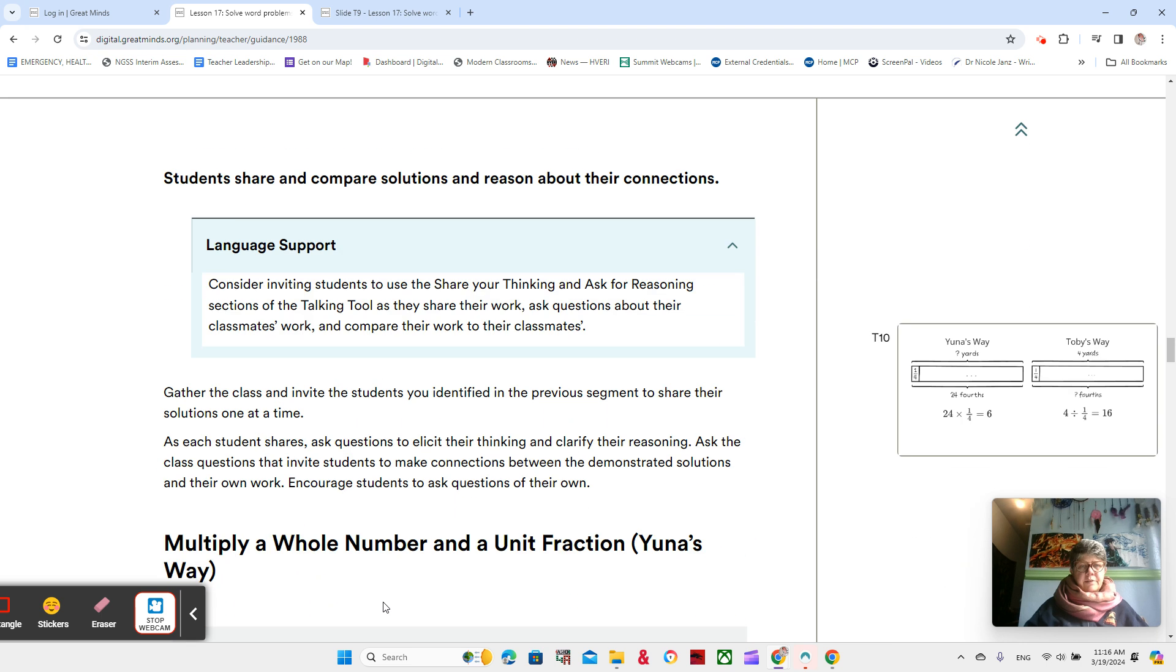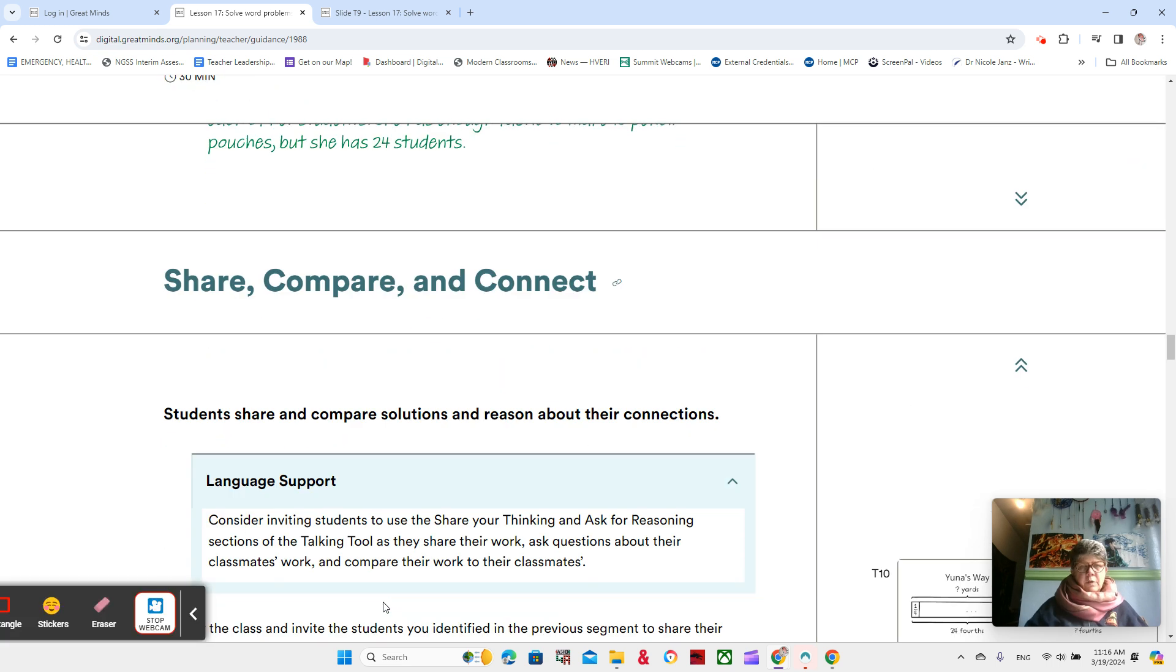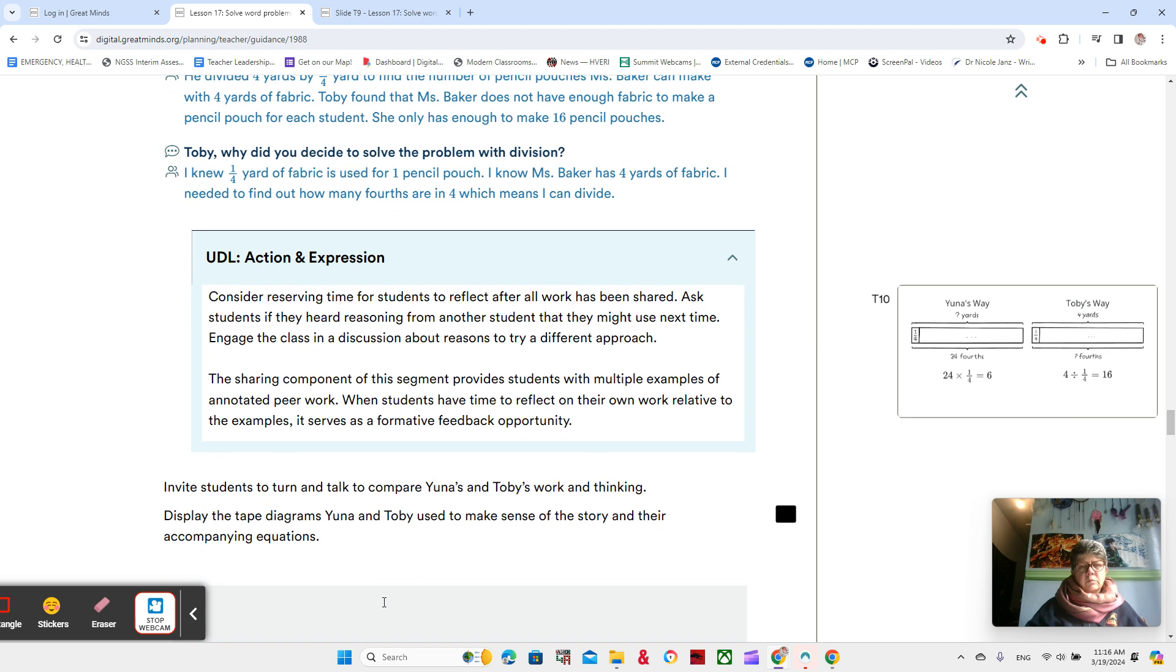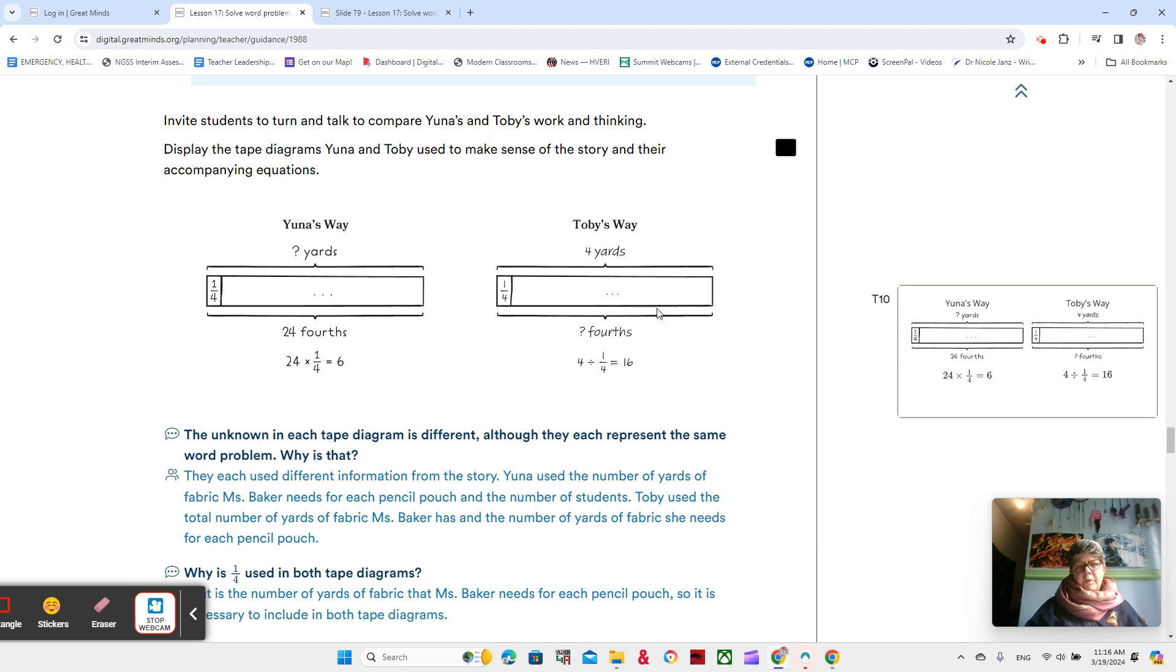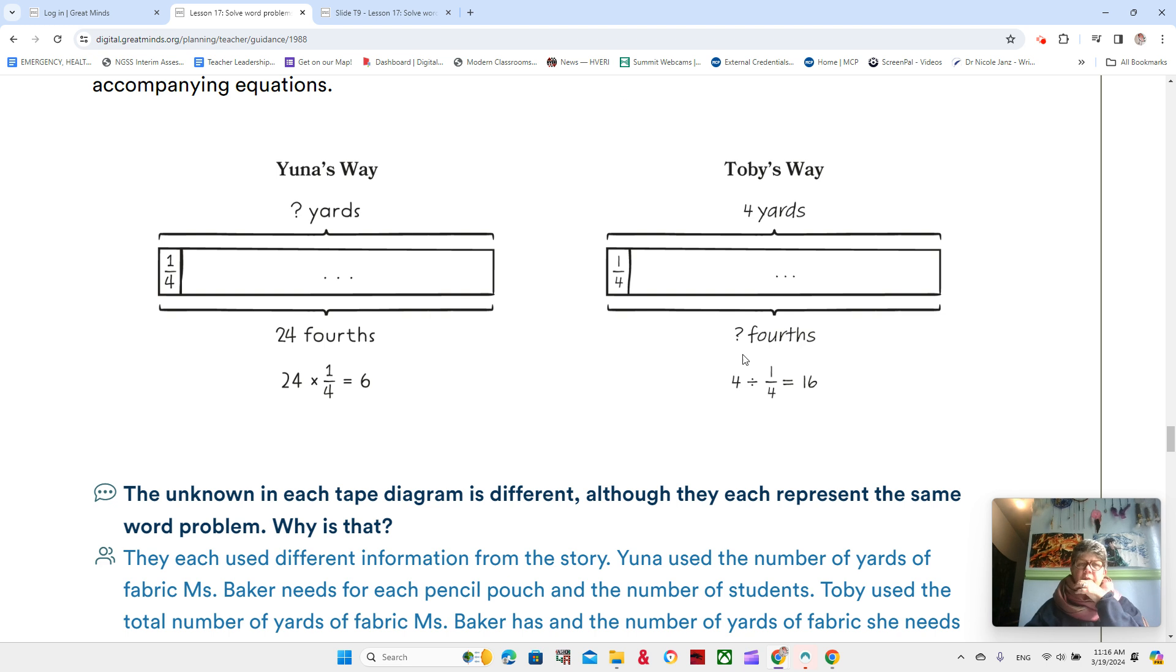So basically, we have two different ways that we could do it. We have Yuna's way and we have Toby's way. Toby is saying how many fourths are in four, and Yuna is saying how many yards is 24 fourths. Both of them show that she doesn't have enough.